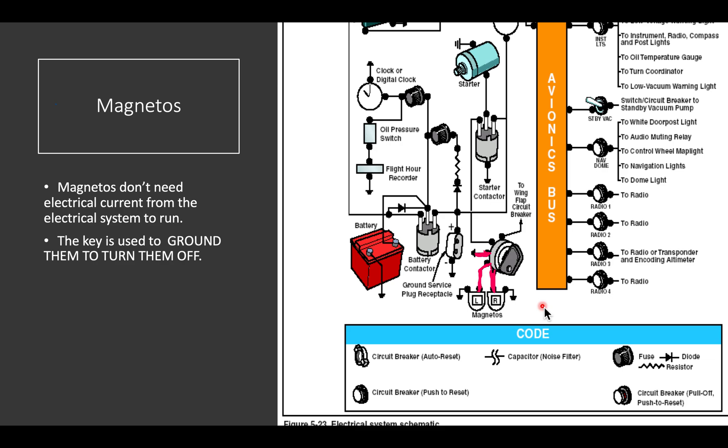If any of the wires in that system are broken, the magneto will default to the on condition, which is why you have to be so careful when you turn the propellers.